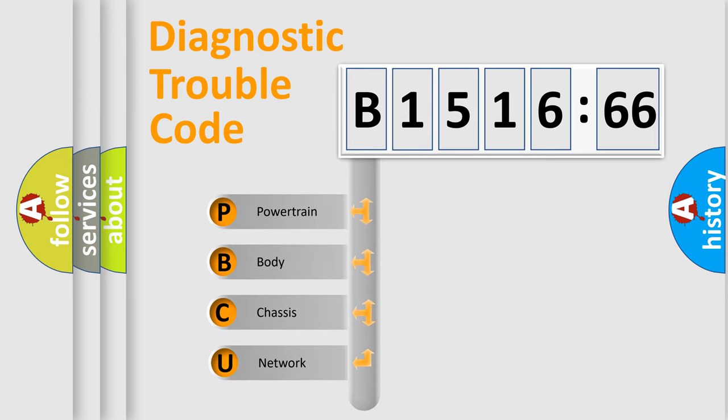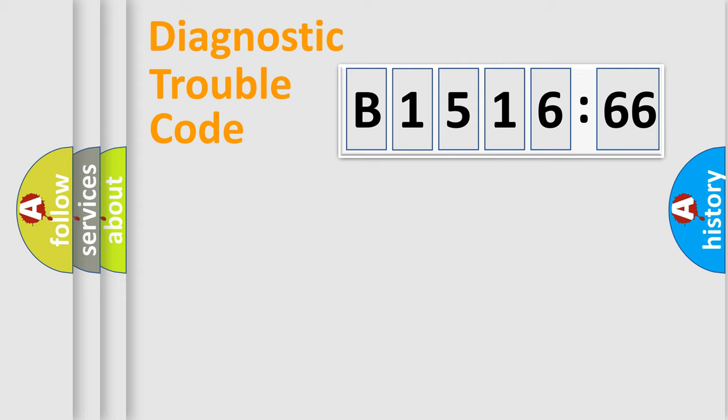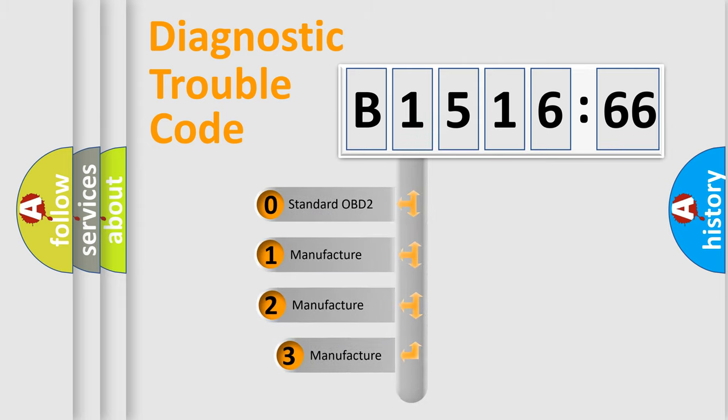First, let's look at the history of diagnostic fault code composition according to the OBD2 protocol, which is unified for all automakers since 2000. We divide the electric system of automobile into four basic units: Powertrain, Body, Chassis, and Network.